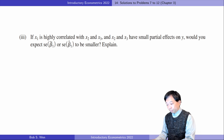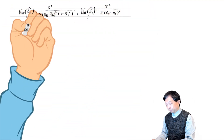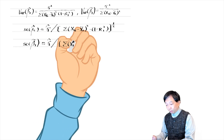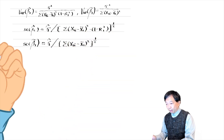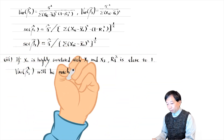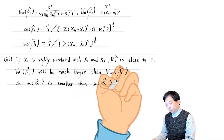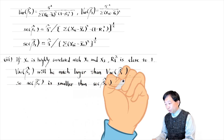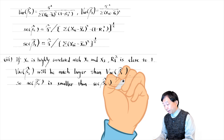For the last two questions, we write down the variance of beta 1 hat and the variance of beta 1 tilde. Note that the standard error is computed using the sample residuals. For the third question: if x1 is highly correlated with x2 and x3, the R-squared 1 is close to 1. The variance of beta 1 hat will be much larger than the variance of beta 1 tilde, so the standard error of beta 1 tilde is smaller than the standard error of beta 1 hat.